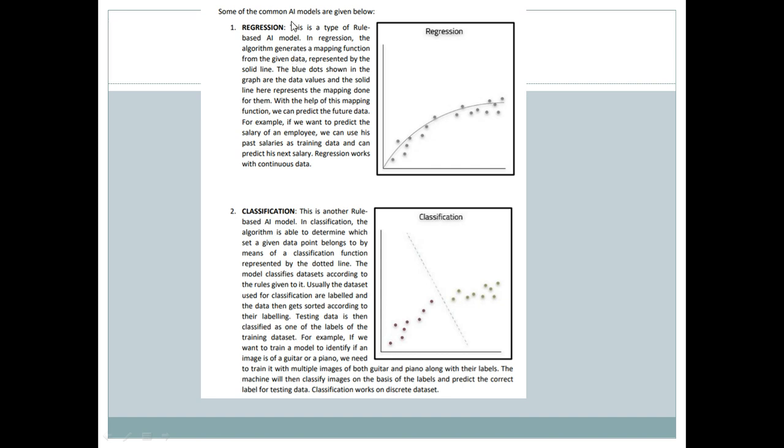We have various common AI models. We have the regression model. In the regression model, the algorithms generate a mapping function from the given data. All the points are marked. With the help of the points that are marked, we get a mapping function. With any new incoming data and the mapping function, we will be able to predict the new value.